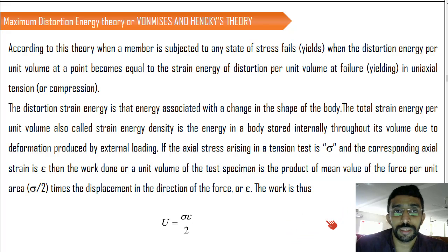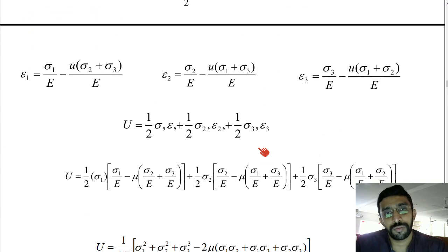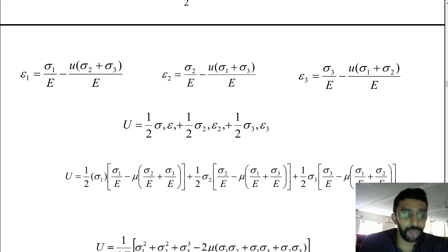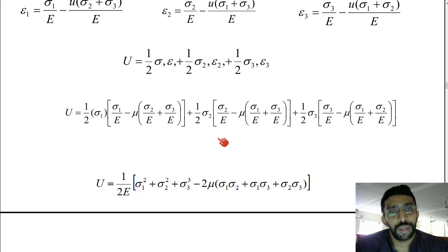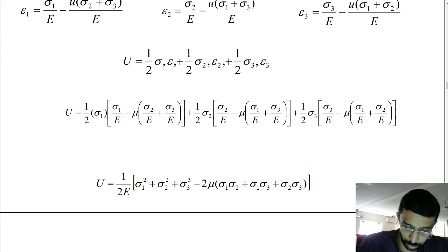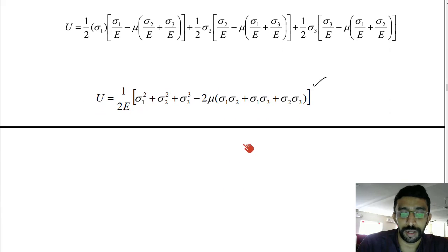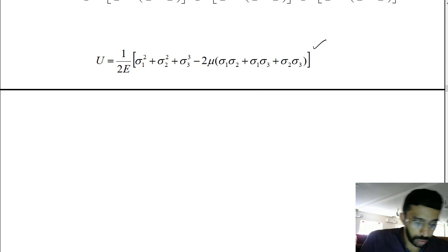We will have a brief discussion about the derivation of von Mises and Henky's theory of failure. This part has already been explained in the previous strain energy theory, where we calculated the strain energy developed in a material by the application of external loads using the principal stresses sigma 1, sigma 2, and sigma 3. By all these substitutions, we obtained the strain energy equation.